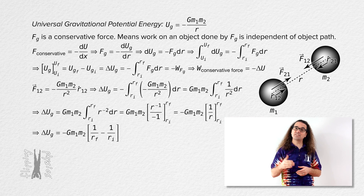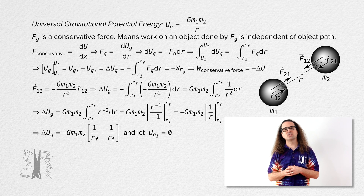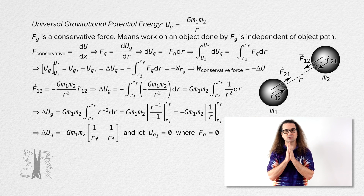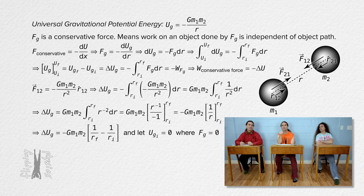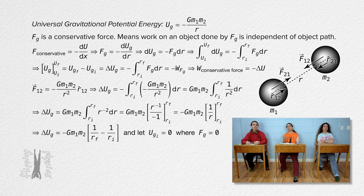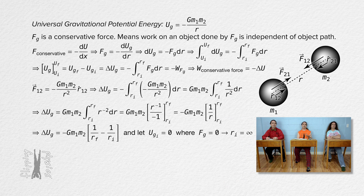With gravitational potential energy, we need to know where gravitational potential energy equals zero. With universal gravitational potential energy, that location is where the force of gravitational attraction between the two objects equals zero. Where is that location? The two objects need to be infinitely far apart for the force of gravitational attraction to equal zero. If r is infinitely large, then Newton's universal law of gravitation equals zero. So we set the location of zero universal gravitational potential energy where r equals infinity and the two objects are infinitely far apart.